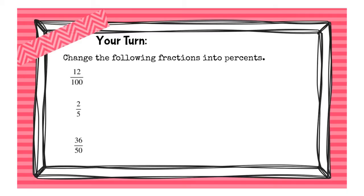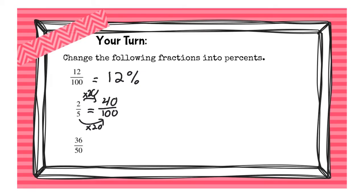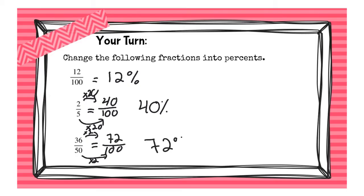Now you're going to write the percent for each of the following. Let's review: 12 out of a hundred would be 12 percent. For two fifths, we would have to make it out of a hundred — five times twenty, two times twenty — so it'd be 40 out of a hundred, which would be 40 percent. Then we have to change 36 fiftieths to be out of a hundred because percents are all out of a hundred — times two, and 36 times two would be 72 — so it would be 72 percent.